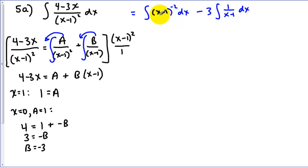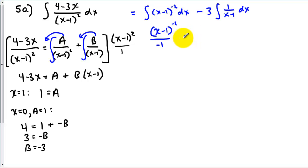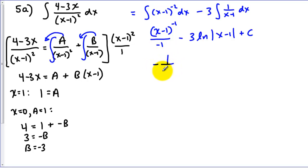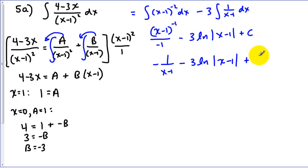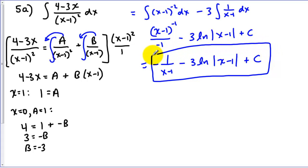So in this one we have u to the nth, where u is x minus 1 and u prime is 1, so we don't need to adjust our constants. Remember, we add 1 to the exponent and divide by the new exponent. And then here we use our ln rule, which we used in the last video. We can't combine the terms because they're not both ln's, but we can get rid of our negative exponent. So that is our answer for 5a.